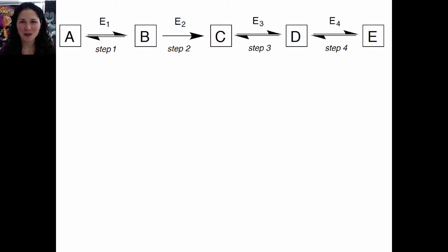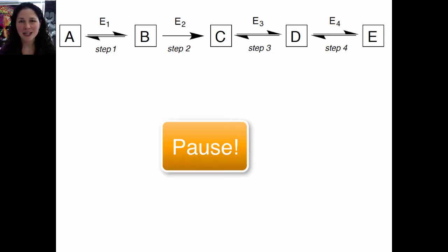The figure in front of you is an example of a generic pathway where A, B, C, D, and E represent molecules, reactants, products, and intermediates. Please pause the video now and use this diagram to answer the questions on the first page of your activity.